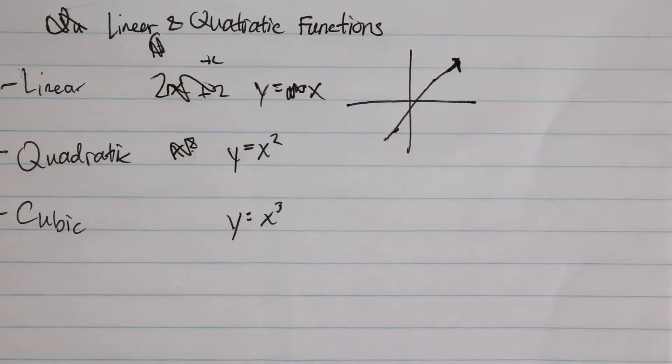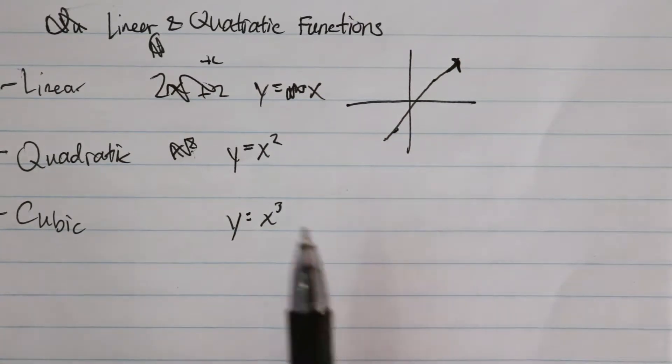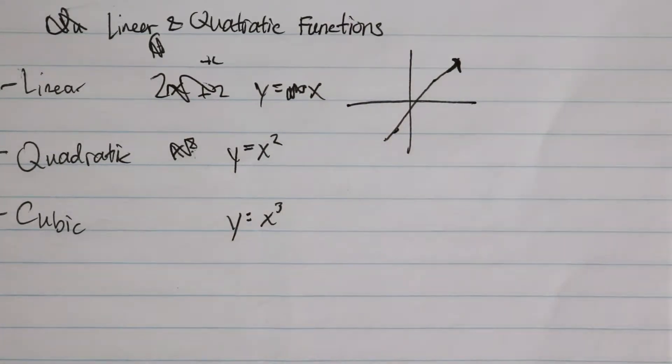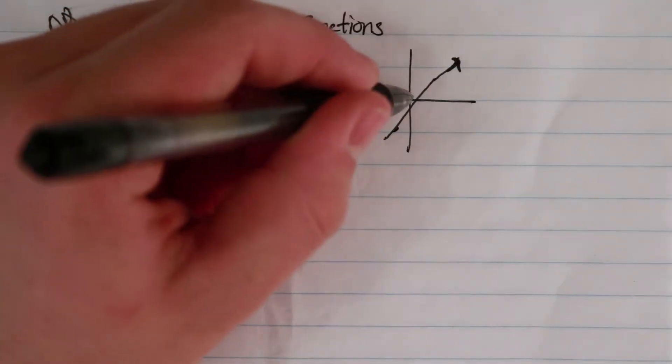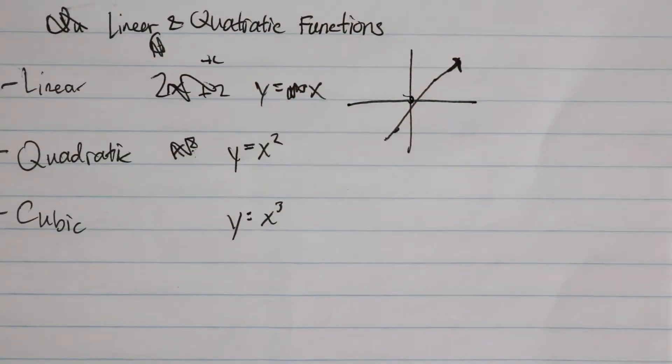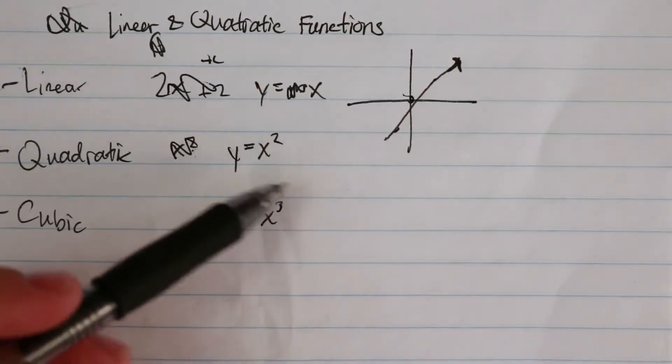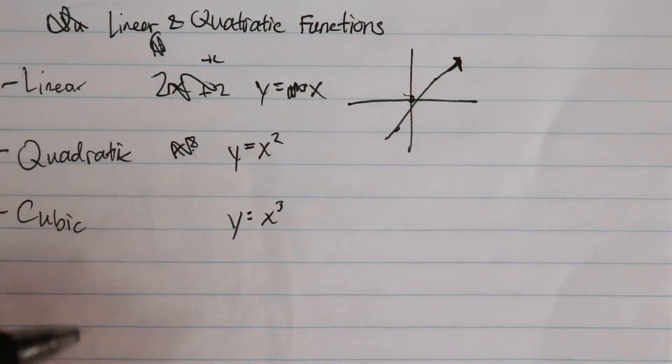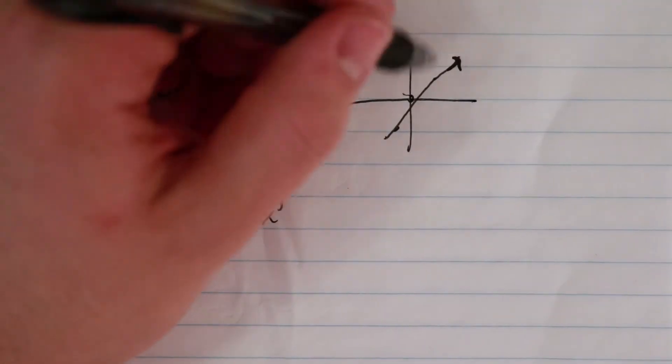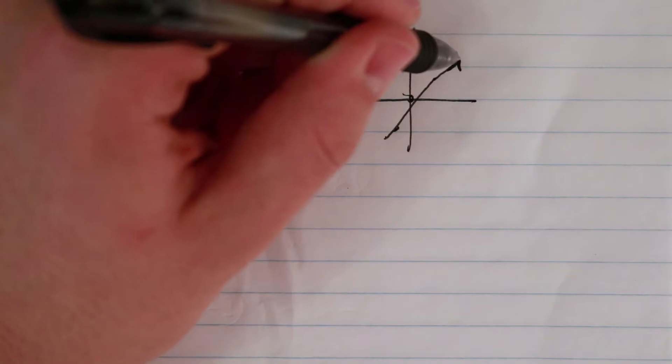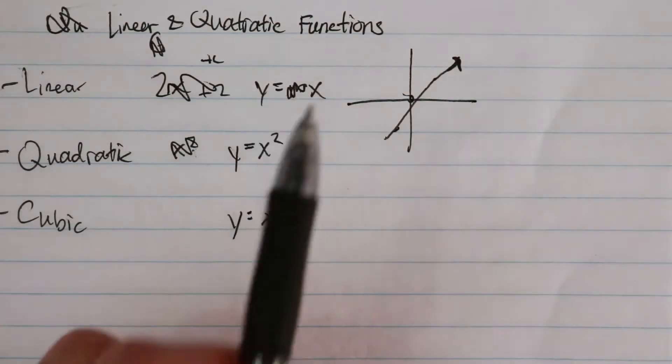The reason we know it goes through the origin is because if I put in 0 for any of these functions, they all touch the origin - the origin being this point in the middle. If you plug in 0 for x, you get 0 for y. The reason this makes sense is because whatever the x value is, that is what the y value is. That's what the function shows.